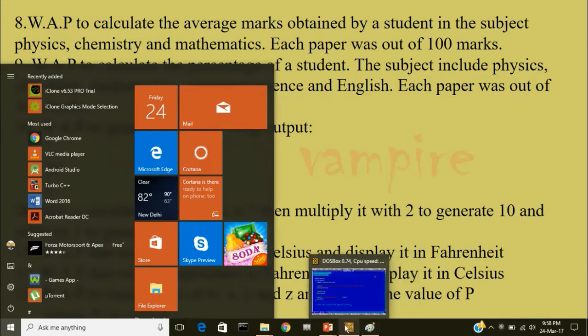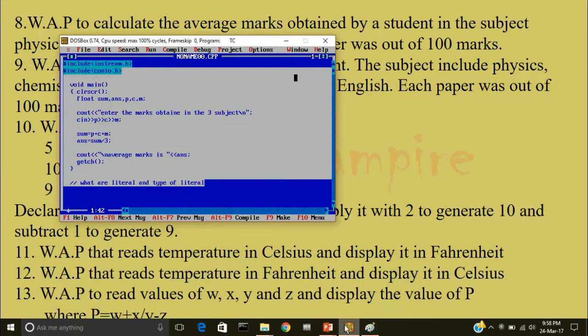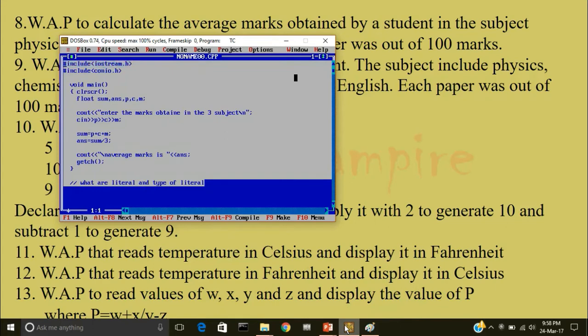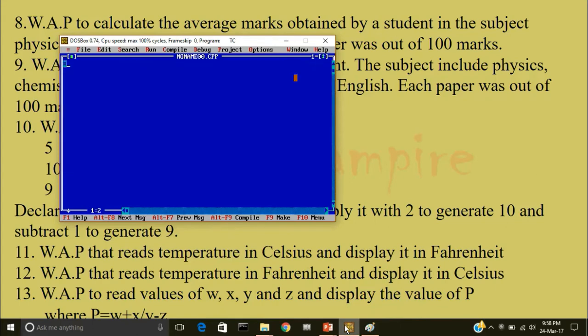I'll open turbo c plus plus again and I'll clear the previous program. I'll write a comment, percentage. First step is to include the header file. I'll hash include iostream.h. Then hash include conio.h.